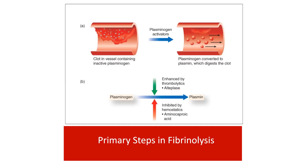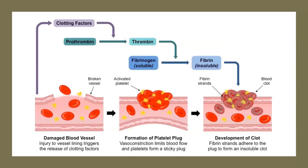To make plasmin, give Alteplase. To inhibit plasmin formation, give aminocaproic acid. When there is a damaged blood vessel — a cut — injury triggers the release of clotting factors. The vessel breaks, and clotting factors 1 through all are released. Prothrombin also comes out and combines with thrombin, which converts fibrinogen to fibrin. Fibrinogen is a soluble component; blood cells accumulate at the injury site forming a platelet plug.